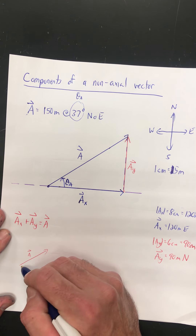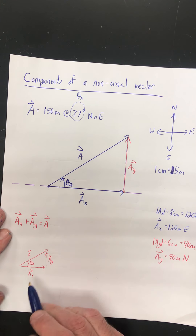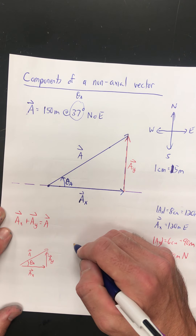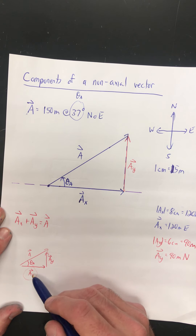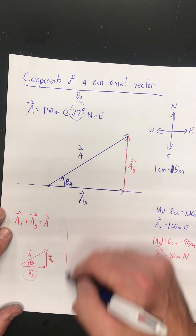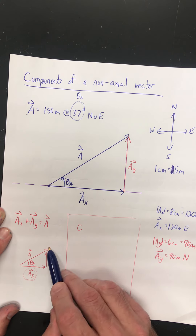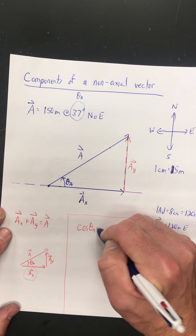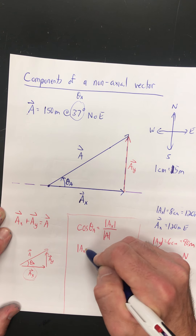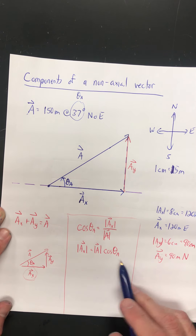I start with a quick sketch of A and its components A sub x and A sub y. A sub x and A sub y always form a right triangle, and angle theta A is always inside that right triangle. To find A sub x mathematically using trig: compared to the angle I know, A sub x is on the adjacent side. I know the angle and the magnitude of the overall vector, so I use cosine. Cosine of theta A equals the magnitude of A sub x over the magnitude of A. Solving: the magnitude of A sub x equals the magnitude of A times cosine of the reference angle theta A.